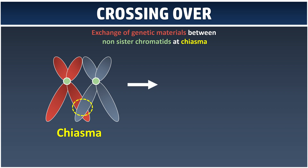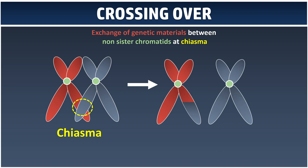Once crossing over is done, what happens is the red chromosome at the lower end where the chiasma is will turn to the color of their partner. Same goes for the gray one — the chiasma location will turn to become red. So this is a very important process to produce genetic variations. This is why you are a combination of both your father and mother — you look more handsome and prettier than your parents because you are the fusion of both of them. You get the best of both worlds.